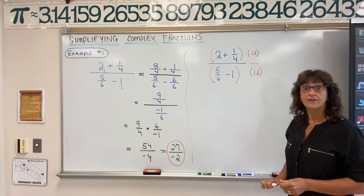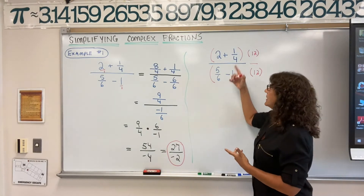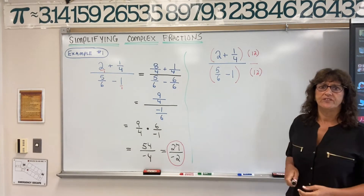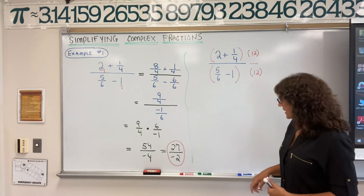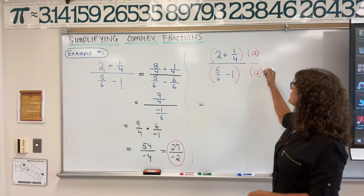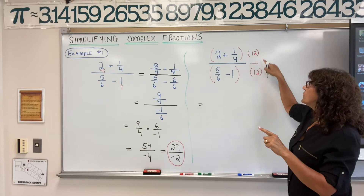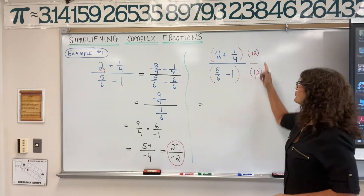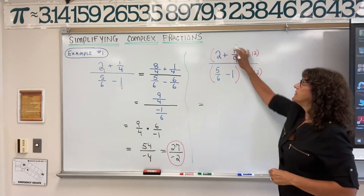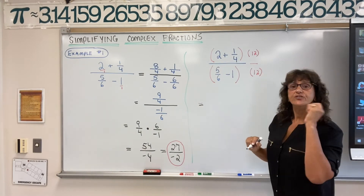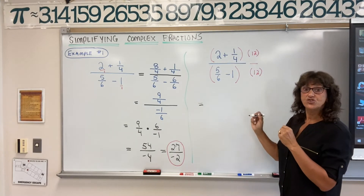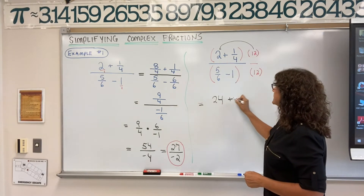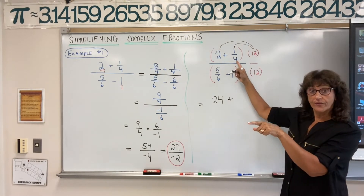So we're going to multiply by twelve over twelve. Some students will multiply by twenty-four over twenty-four — that will still work, but you'd have to reduce at the end. But twelve is the least common multiple. We're going to distribute that twelve to each term in the numerator and denominator. Twelve divided by twelve is one, so multiplying by twelve over twelve is really multiplying by one — we're not changing the value, just the form.